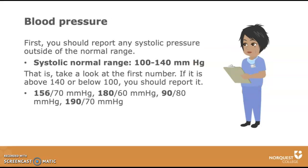So, what should you report? To decide what to report, you will need to take a look at both numbers. First, you should report any systolic pressure outside the normal range of 100 to 140 mmHg. Take a look at the first number — if it is above 140 or below 100, you should report it.